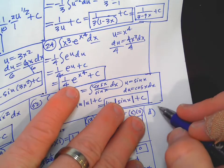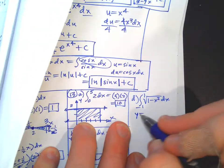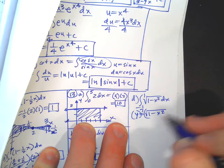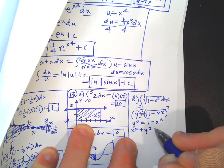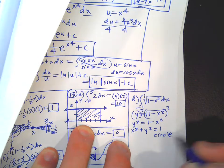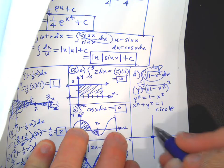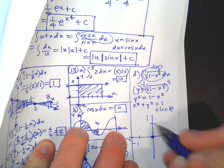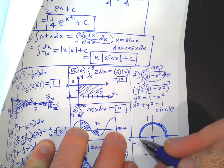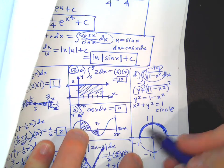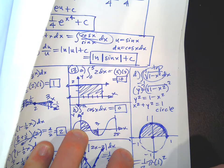Part d: integrate from -1 to 1 of √(1 - x²) dx. Square both sides: x² + y² = 1 — it's a circle centered at the origin with radius 1. Because we started with the square root, it's only the top half. We're integrating from -1 to 1, so it's exactly a semicircle. Area equals one-half pi r² equals pi/2.